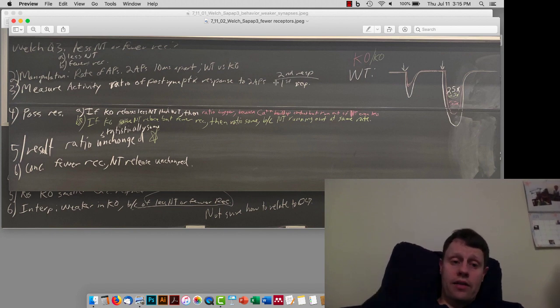On the other hand, if there is less neurotransmitter being released, then we expect there to be more calcium buildup, not running out of neurotransmitters. So, the calcium buildup becomes the dominant factor. And so, we're going to see a larger ratio. The first response is smaller. The second response is still going to be smaller than the second response in wild-type, but the ratio of the two is going to be larger.